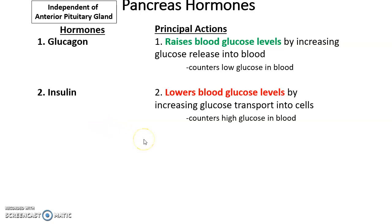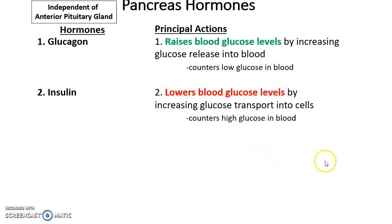Insulin is released when the pancreas determines that glucose levels in the blood are too high. Insulin goes out to various tissues and causes them to take up glucose, removing it from the bloodstream and bringing it into liver tissue or fat tissue. This lowers glucose levels by increasing the transport of glucose into various cells in the body.